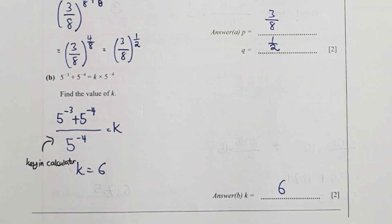For part b, I shifted away the 5 to the power of negative 4 to the other side. So I take 5 to the power of negative 3 plus 5 to the power of negative 4 divided by 5 to the power of negative 4. Key in your calculator, your result should be 6.